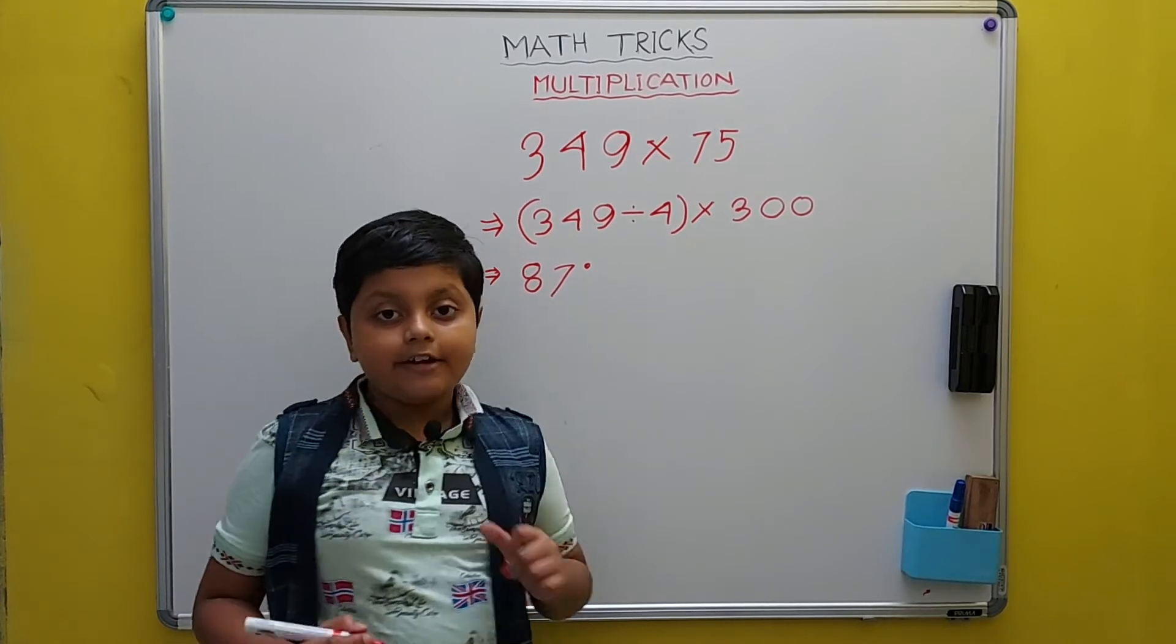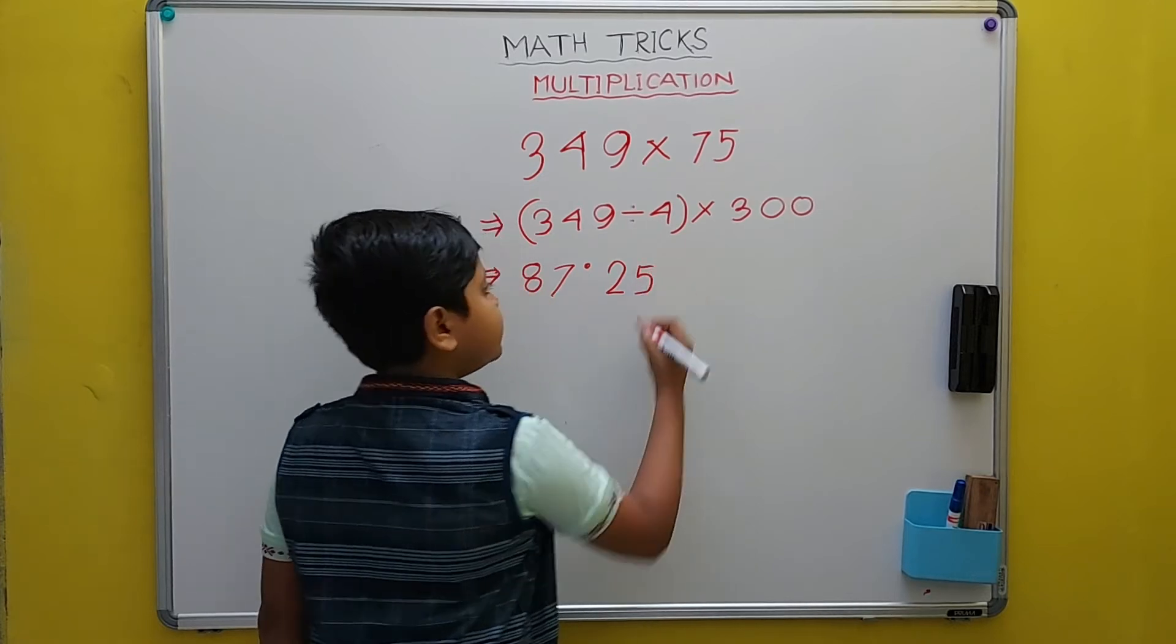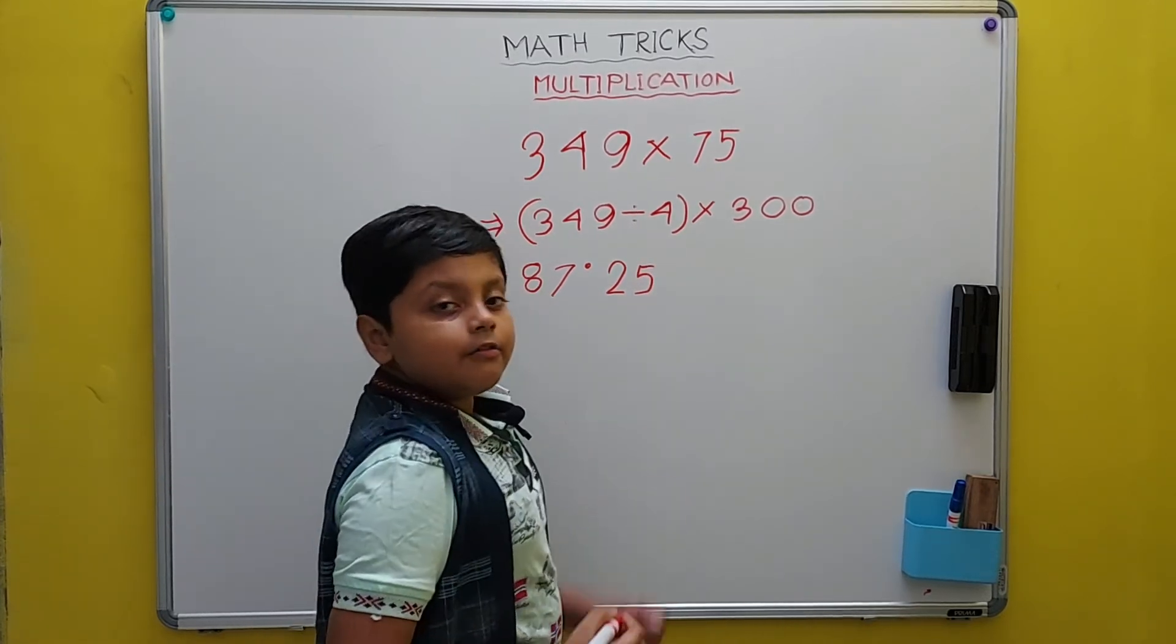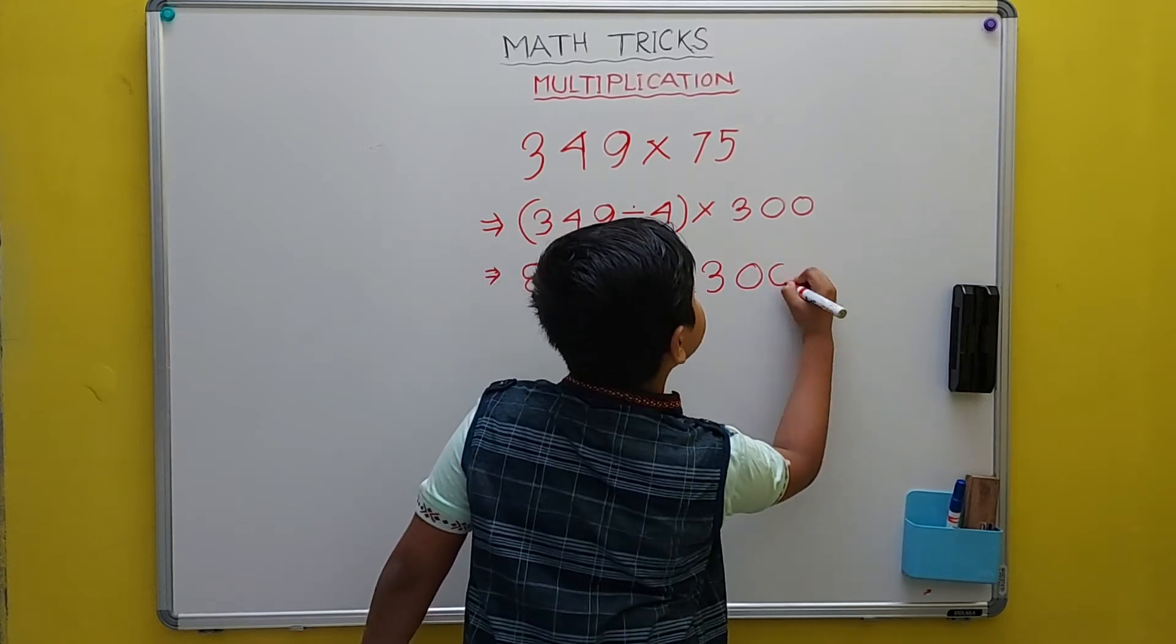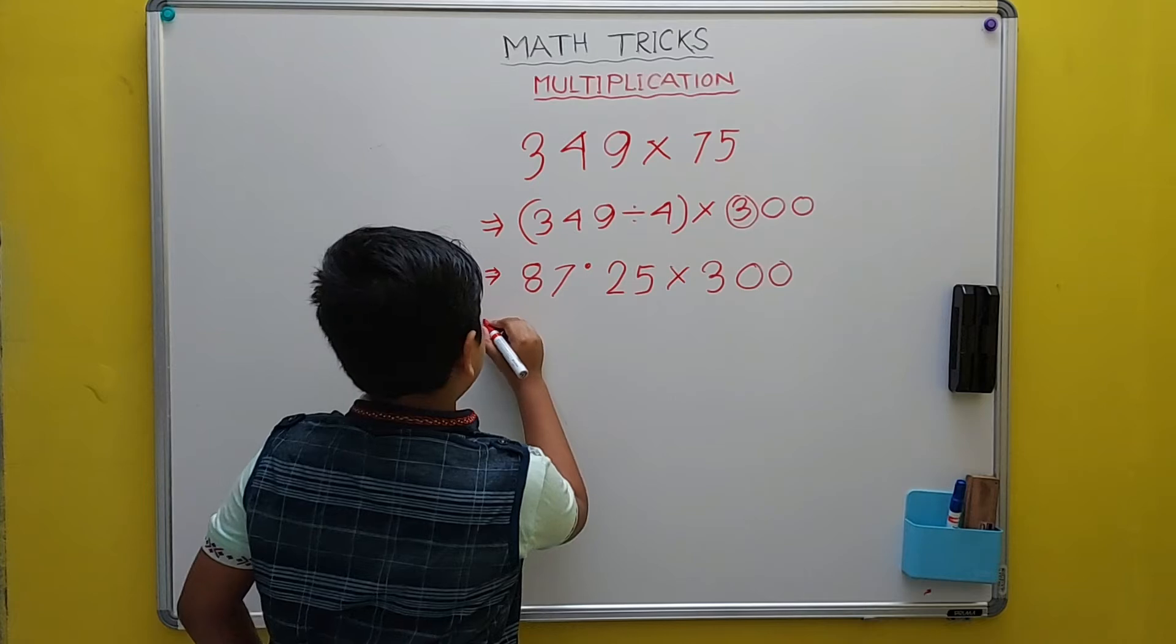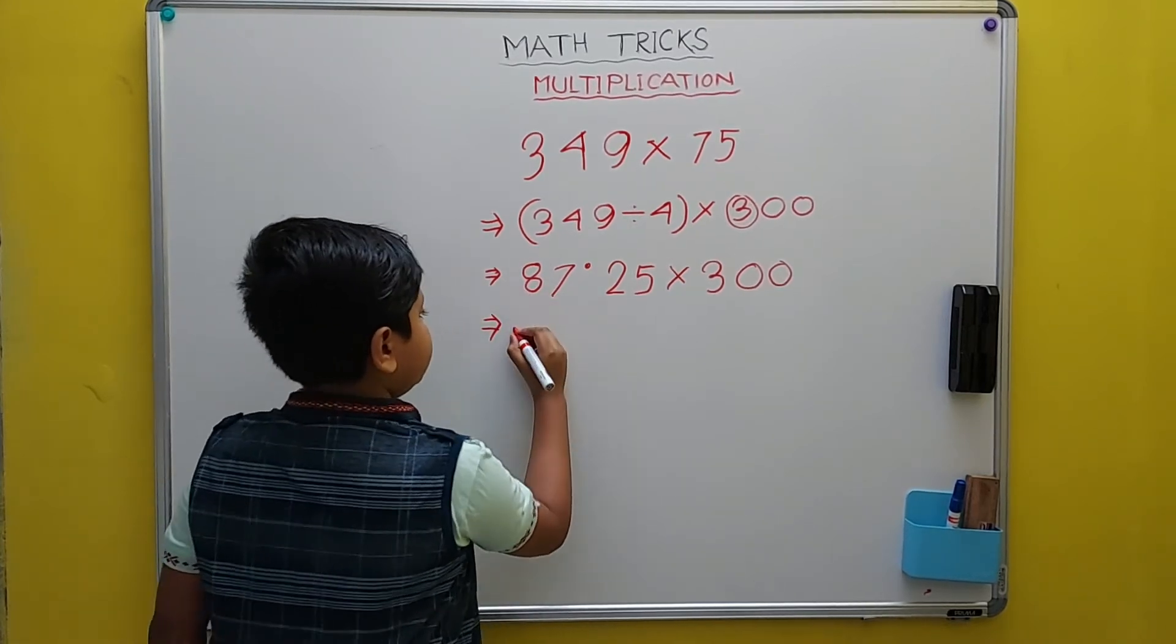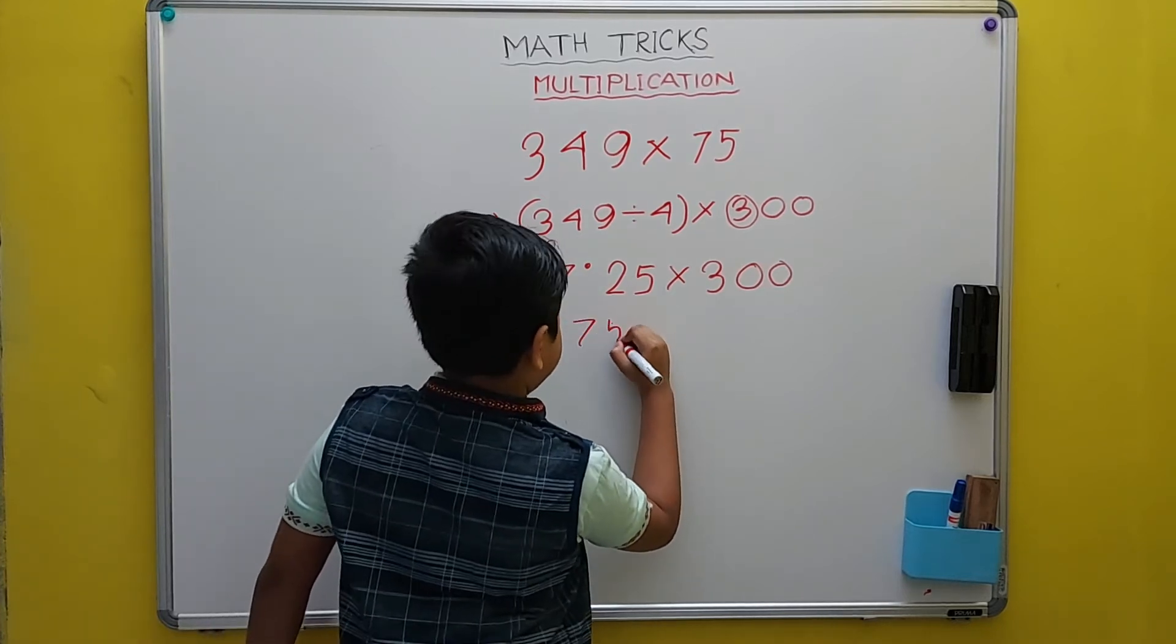So we will write 25, and then we will multiply this by 3, and then add two zeros as I said. So it will be 26175.